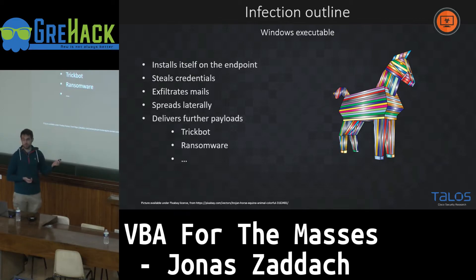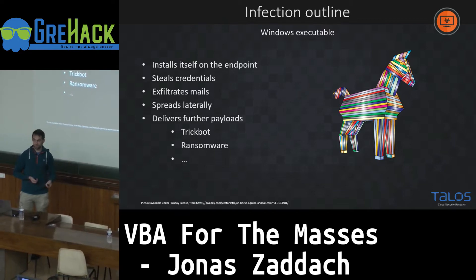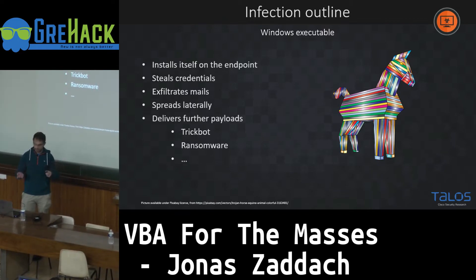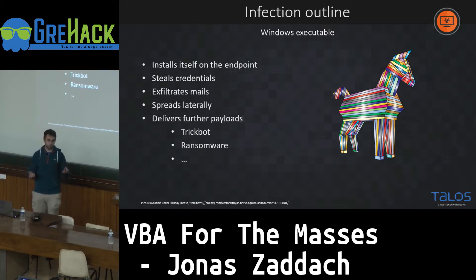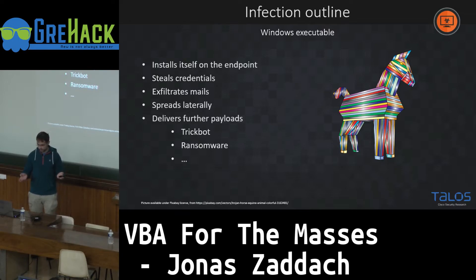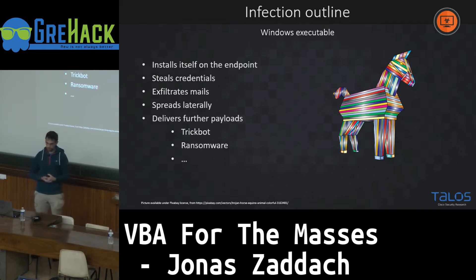Then you install the actual executable, which downloads later stages. It will steal your credentials, exfiltrate 180 days of emails to attack your contacts, and spread laterally in the network via EternalBlue or other vulnerabilities. Since 2015, Emotet is also delivering other payloads — it's not the most malicious payload itself anymore, but it delivers TrickBot, ransomware, and similar threats. At this point, you're owned.